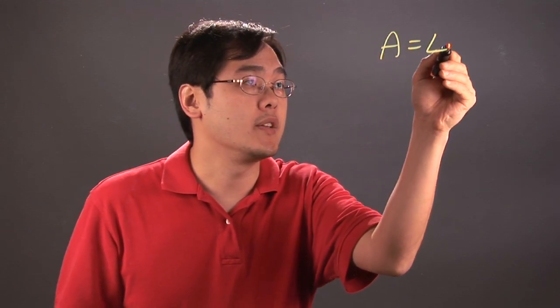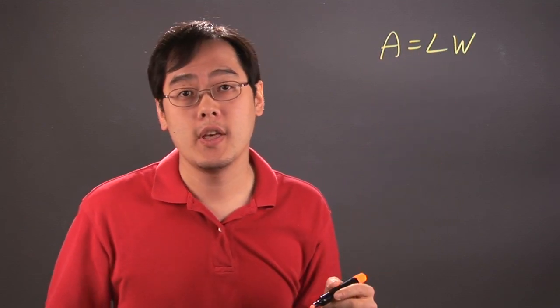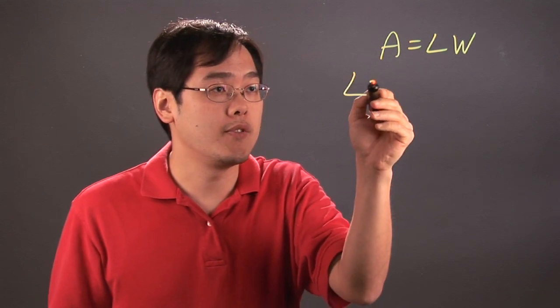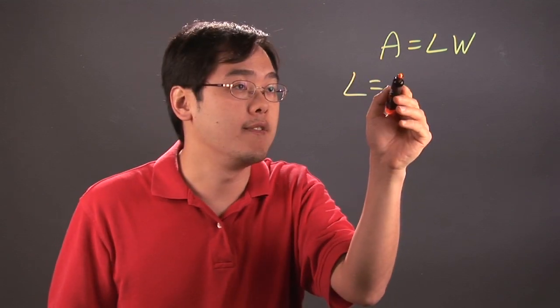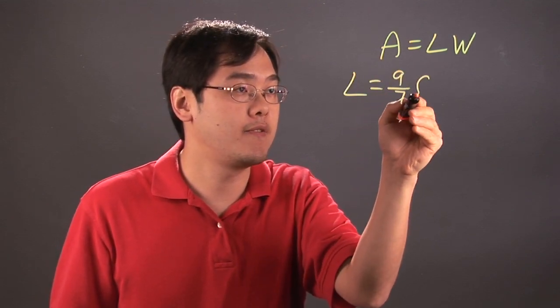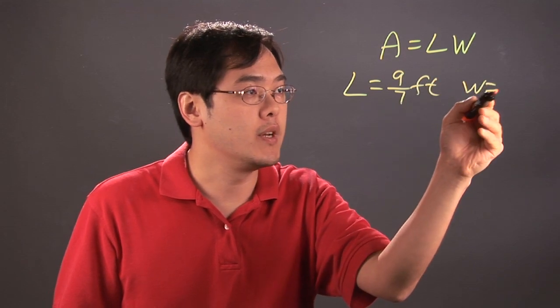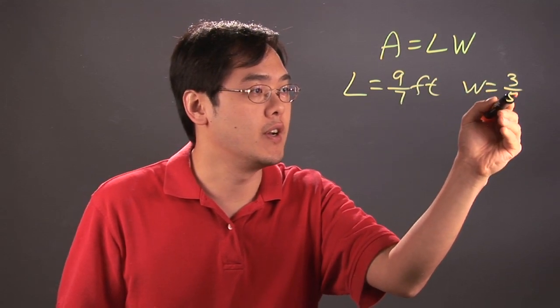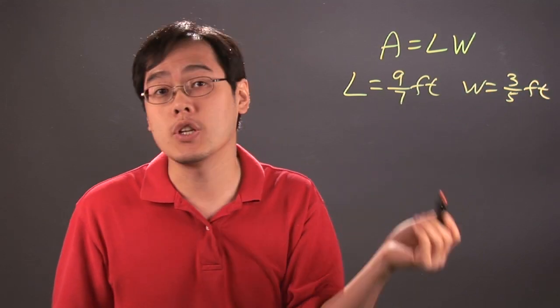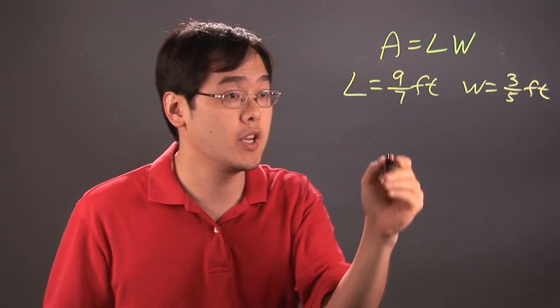You know that the area of a rectangle is area equals length times width. So if your length is nine-sevenths feet and your width is three-fifths of a foot, what you can do is multiply the two together and you'll be good to go.